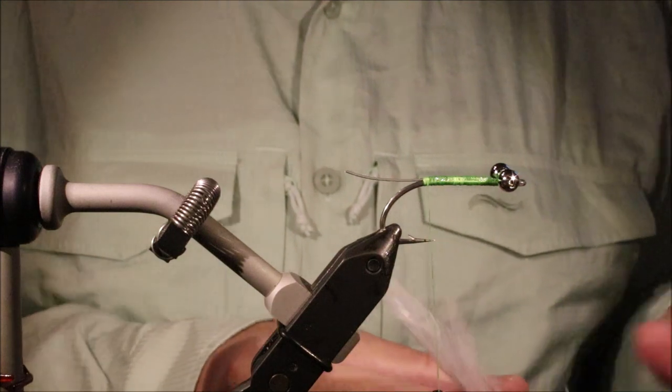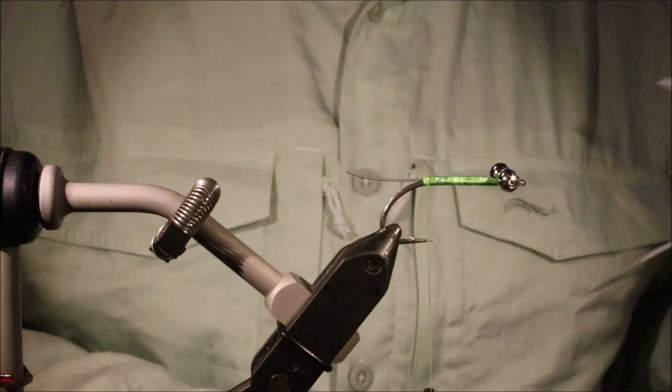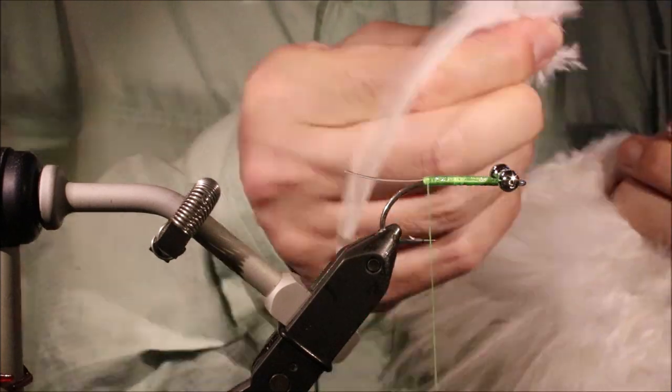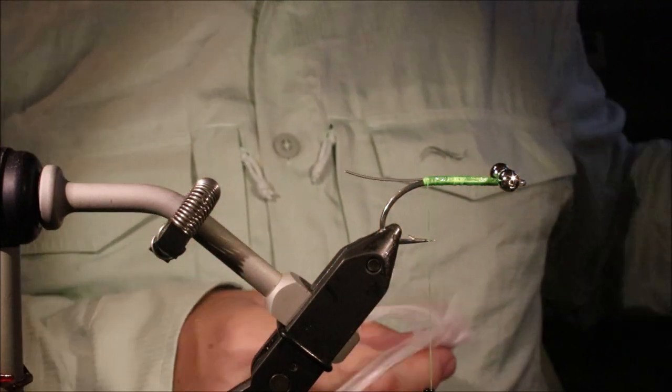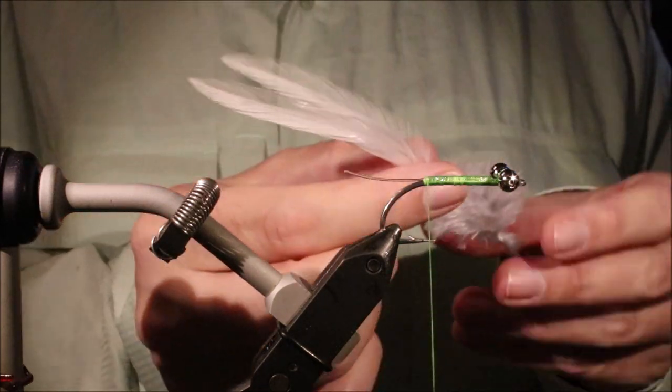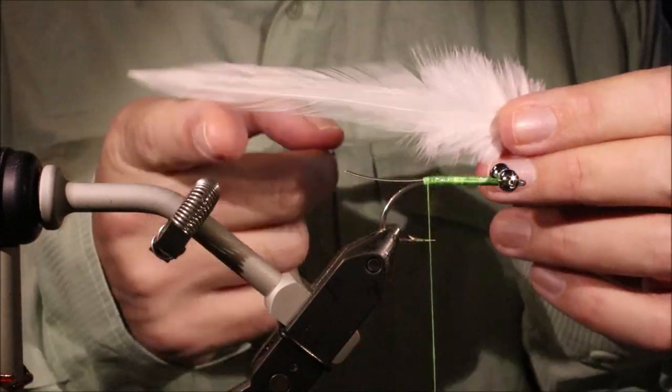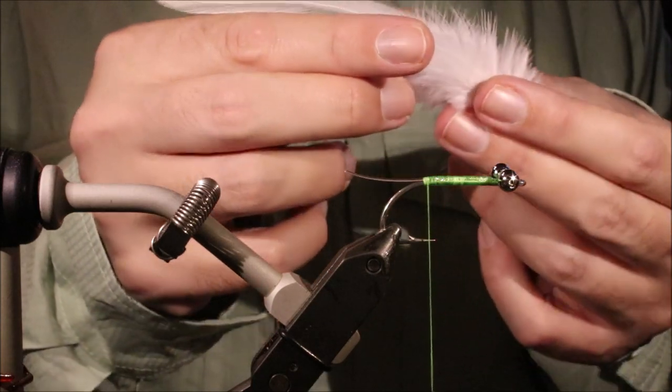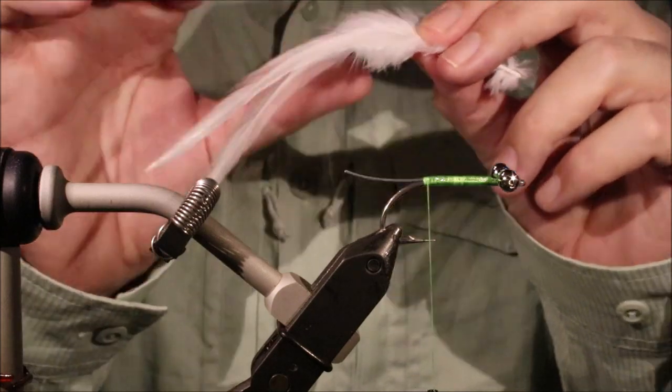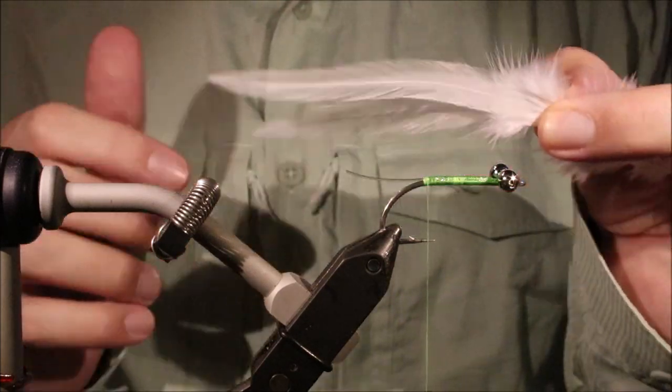So for the tail, I'm using four saddle hackles, just strung ordinary strung saddle. You can buy like the nice Whiting saddles if you want, the American saddles are quite good. But, to be honest, I think you actually get a better fishing fly with the cheap stuff. They're a bit softer, they're maybe not just as perfectly uniform, but they swim a bit better. Unless you're looking for something that's to be really nicely matched up, these are ideal.